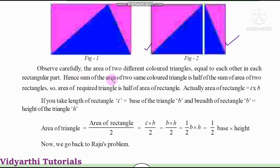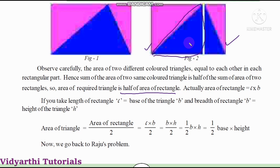So, the area of the required triangle is half of the area of the rectangle. Therefore, the area of the triangle is equal to length into breadth divided by 2.